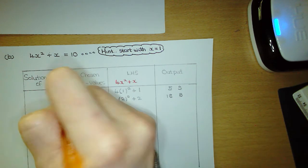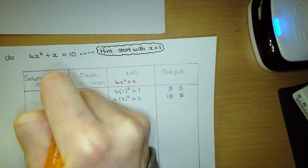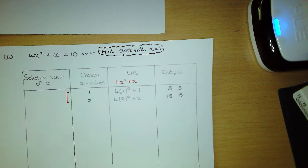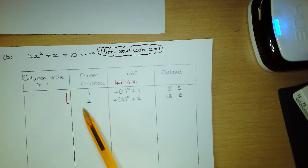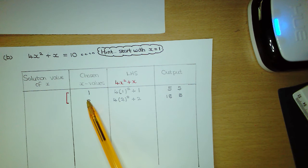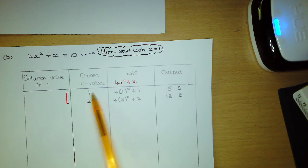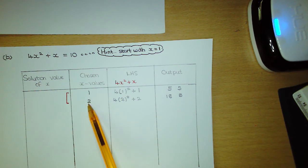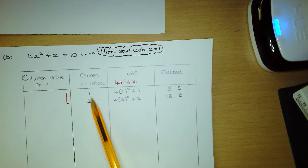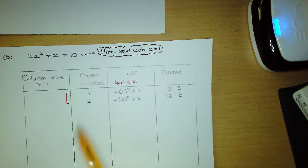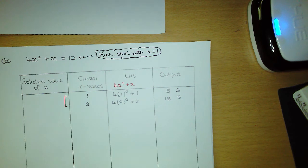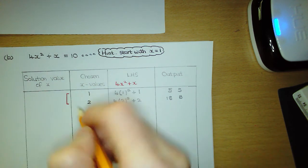Now we have to narrow this gap — make the gap smaller. We look at the x values at each end of the gap, which are 1 and 2. You'll notice they have the same number of digits and their last digit differs by 1, so we now go halfway between them. The next x value we're going to pick is 1.5.